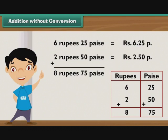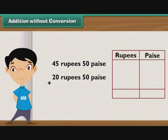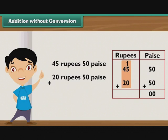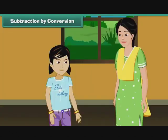Now take another example. Add 45 rupees 50 paise and 20 rupees 50 paise. Step 1: Add the numbers in the paise column — 50 plus 50 equals 100 paise; write 00 in the paise column and carry forward 1 to the rupee column. Step 2: Add the numbers in the rupees column — 1 plus 45 plus 20 equals 66 rupees; write 66 in the rupees column. So the answer is 66 rupees.